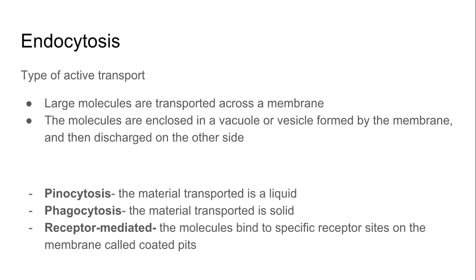Another type of active transport is what we refer to as endocytosis, where large molecules are transported across a membrane. Usually these molecules are enclosed in a vacuole or a vesicle and then discharged on the other side. There are three types: pinocytosis, where the material transported is a liquid; phagocytosis, where the material transported is a solid; and receptor-mediated endocytosis, where molecules have to bind to a specific receptor site on the membrane called coated pits.